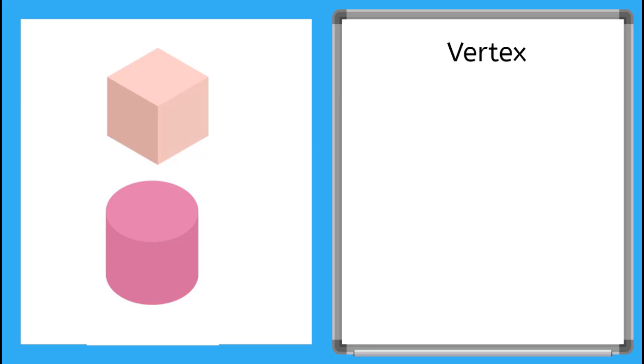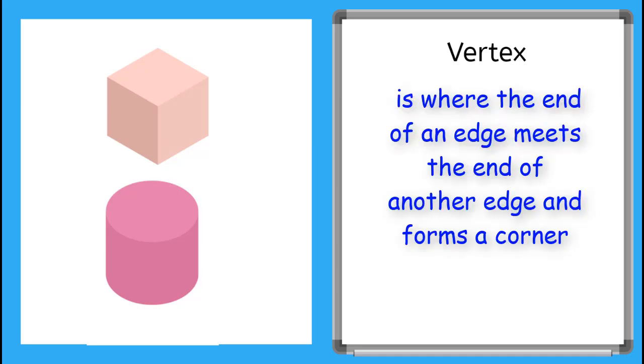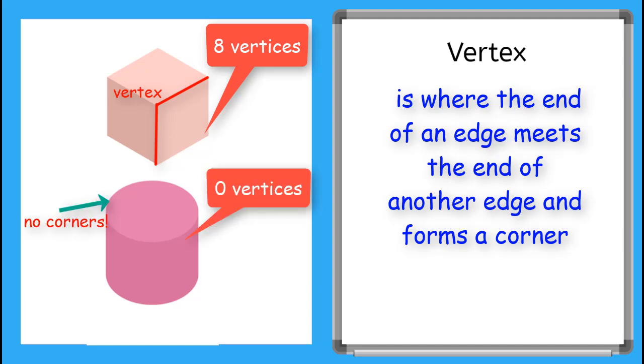A vertex is where the end of an edge meets the end of another edge and forms a corner. On this cube, we can see where the edges meet to form the corners. A cube has eight vertices. Since this cylinder has no edges that meet at a point, it has zero vertices.